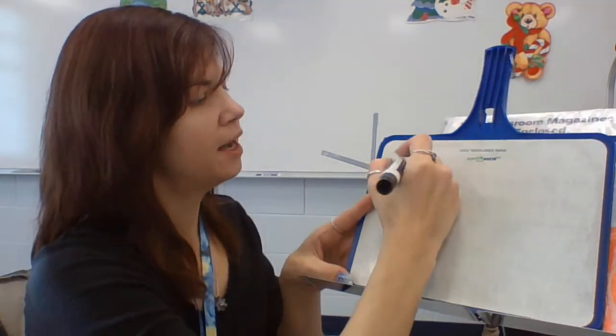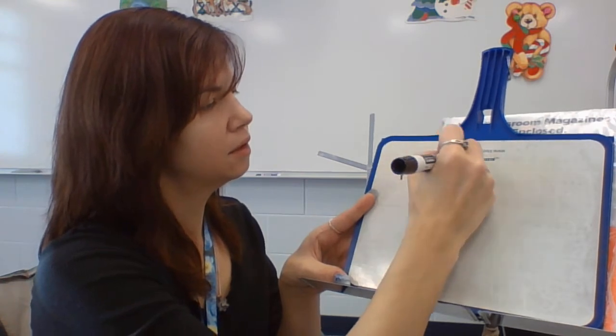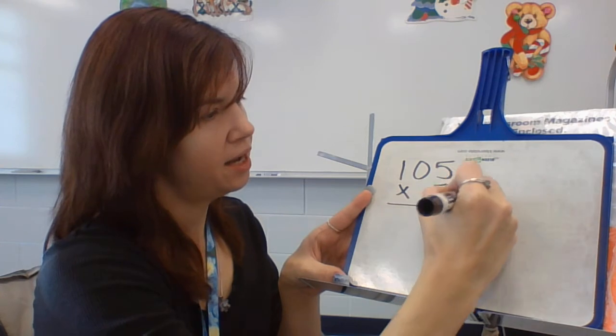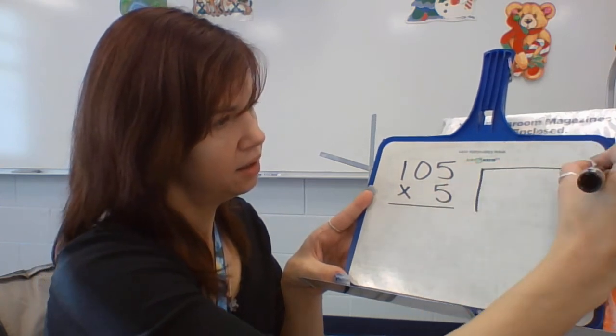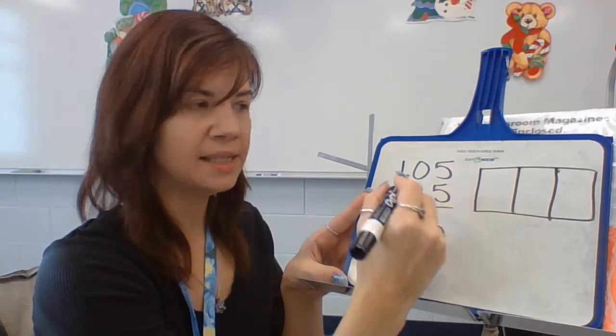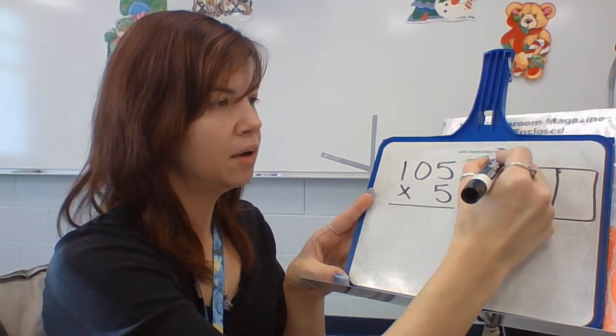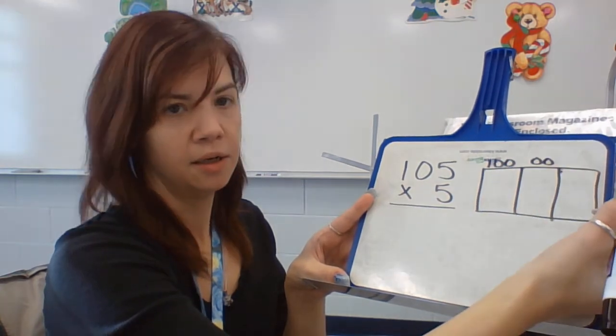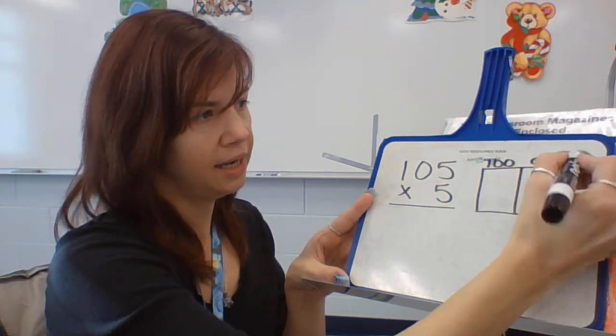105 times 5. There's my area model. Now, this one's a little tricky because it has a zero. So, there's my 100, zero, and the 5. So 105.